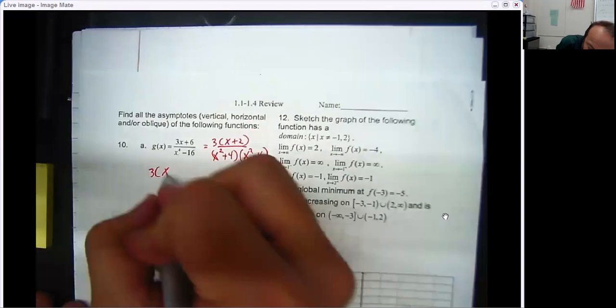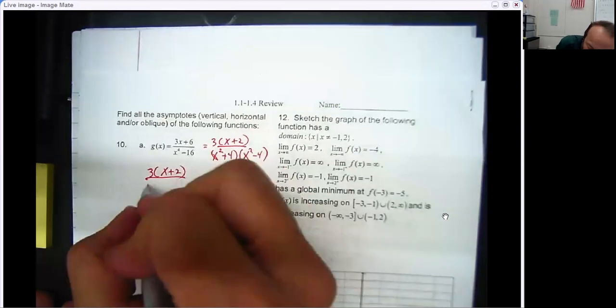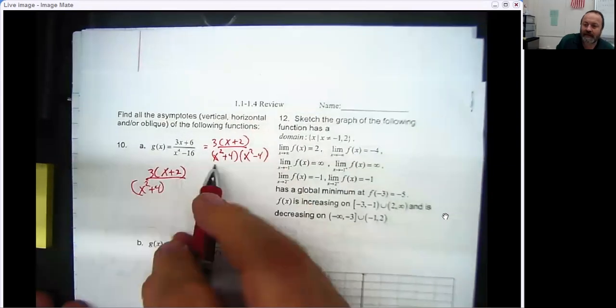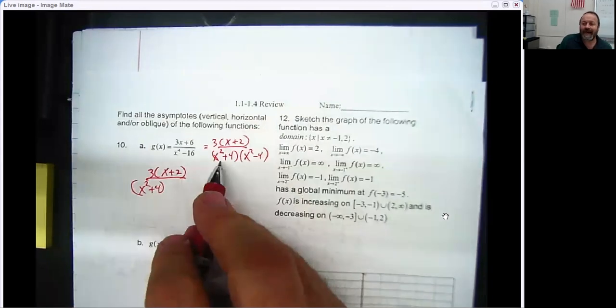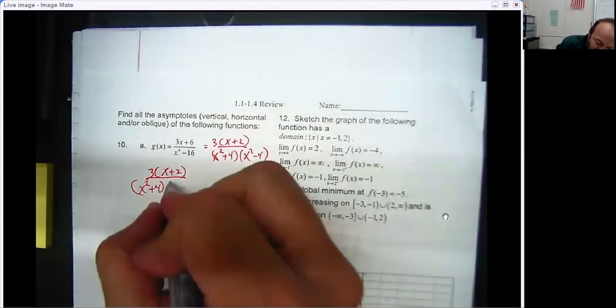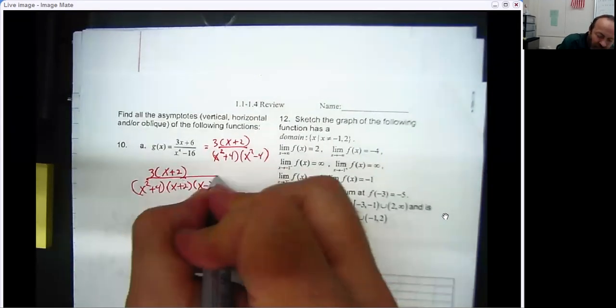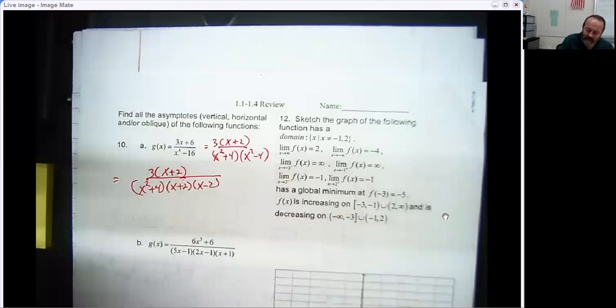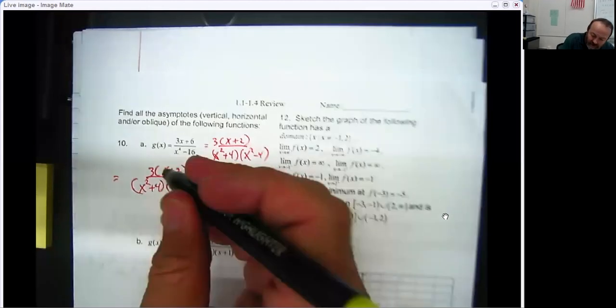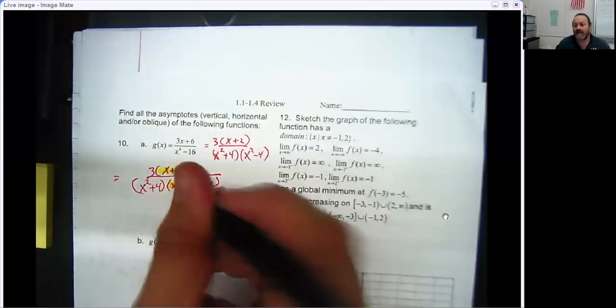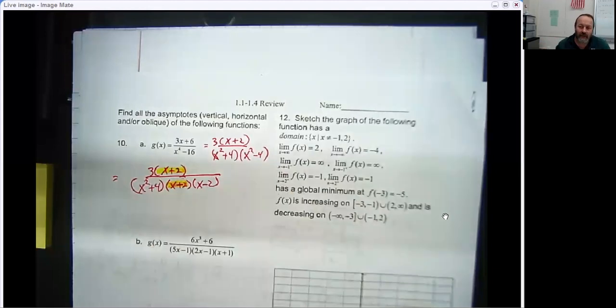So I have my x plus 2, but what I notice, although I cannot factor x squared plus 4, I can factor this one to x plus 2, x minus 2. And I hope that you've been in class long enough to realize that when you see something like this, that's telling you that there's going to be a hole.